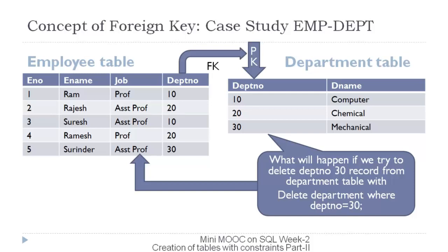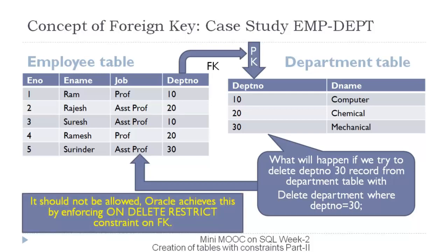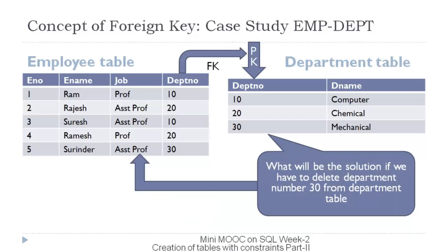Consider a case where a user tries to delete department number 30 from the department table. This should not be allowed because the record of employee number 5 would become invalid. Oracle achieves this through the ON DELETE RESTRICT constraint on the foreign key, and it is the default option on the foreign key constraint. But what will be the solution if we have to delete department number 30 from the department table?